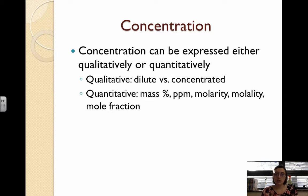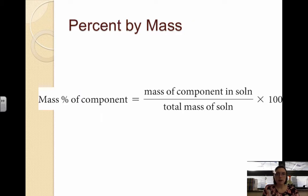That could be mass percent, parts per million, molarity, all of those. The first way we can calculate concentration is percent by mass, which is one of the simplest quantitative expressions. It's sometimes called percent by mass or mass percent. Percent just means out of 100, so that's why we have the times 100 over here. All we're doing to find mass percent is taking the ratio.